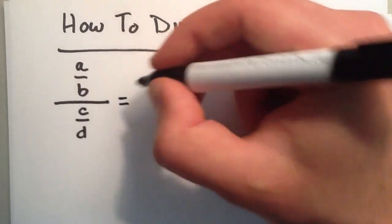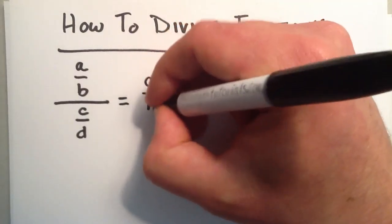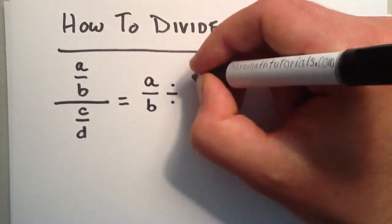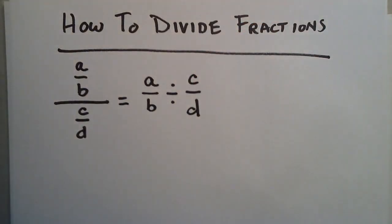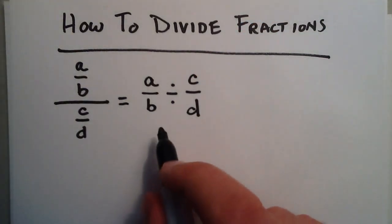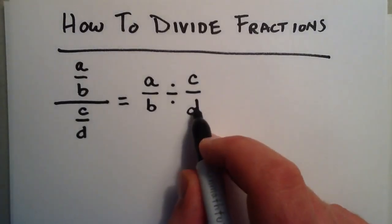Now this can also be written as the fraction a over b divided by the fraction c over d.